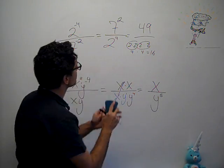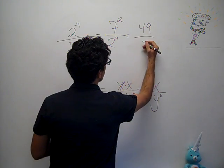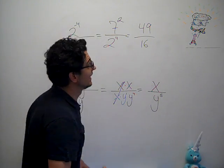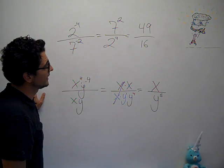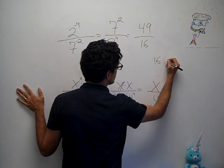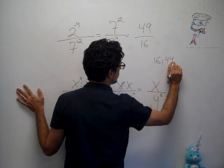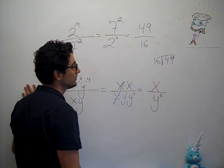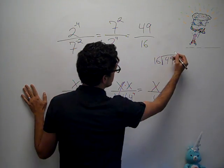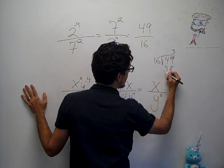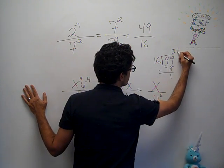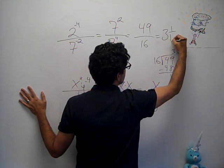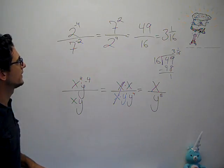So I'd end up with 49 over 16. And I can simplify this. So I can think how many times does 16 go into 49? That could be 3 to give me 48, and I have 1 sixteenth remaining. So my final answer would be 3 and 1 sixteenth.